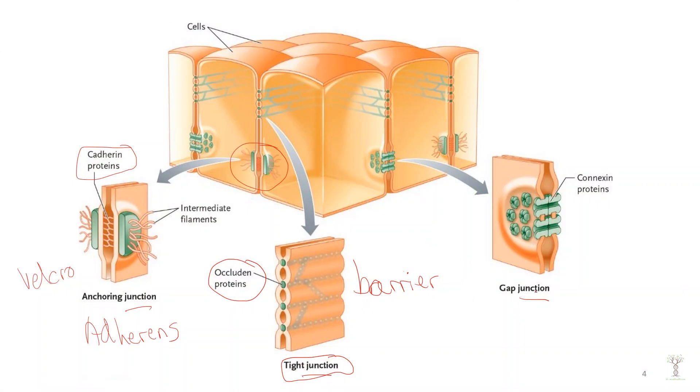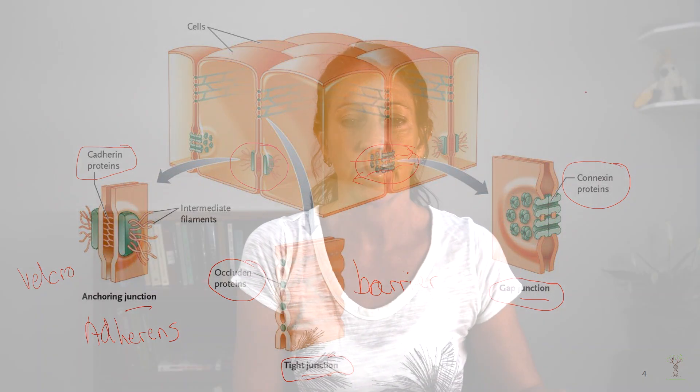The last type is gap junctions — channels that form between cells. They are composed of proteins called connexins, and they allow very specific signaling molecules to move between cells so that cells can communicate and function as a whole. A great example is the heart: all of the cardiomyocytes need to contract at the same time so the heart can pump blood out, and gap junctions allow those signaling molecules to pass between cells very quickly, enabling coordinated function.